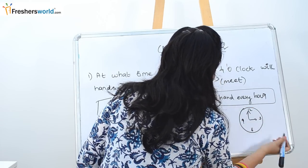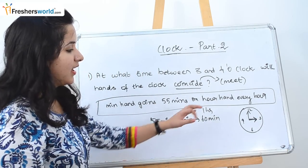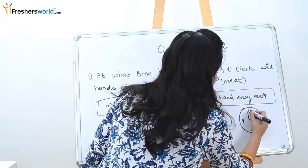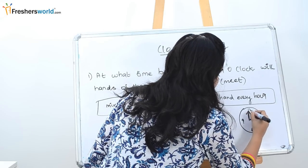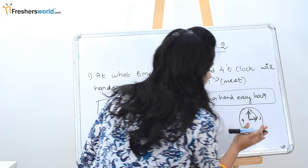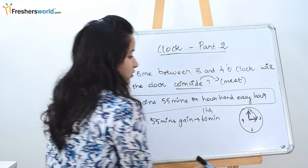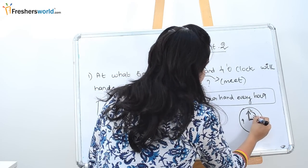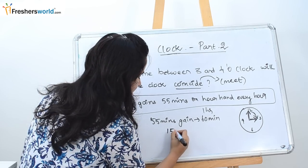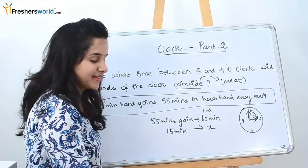We are starting at 3 o'clock. We want the hour hand and the minute hand to meet. For them to meet, the long hand needs to come to the 3 position on the clock. They will meet somewhere near the 15-minute mark. So the minute hand has to gain 15 minutes in order for them to meet. The gaining minute here is 15, and the time at which they meet is x.